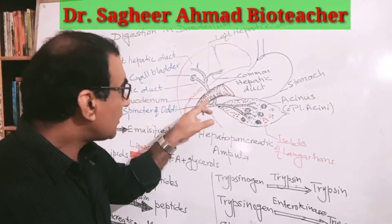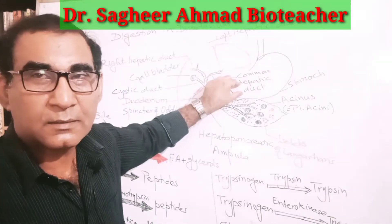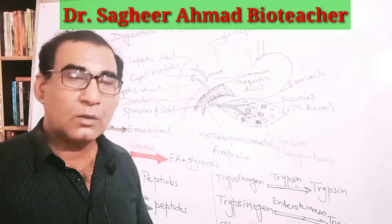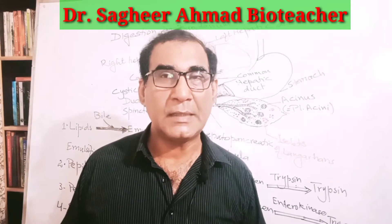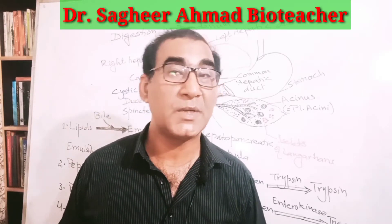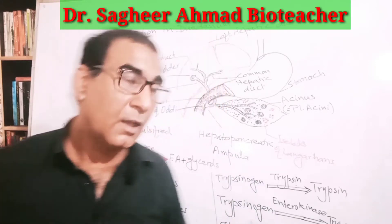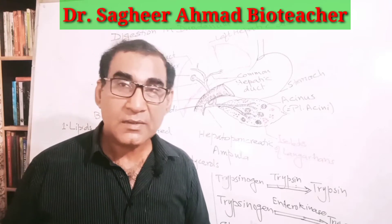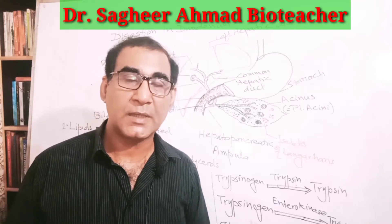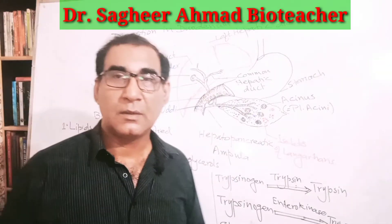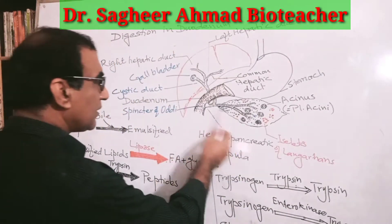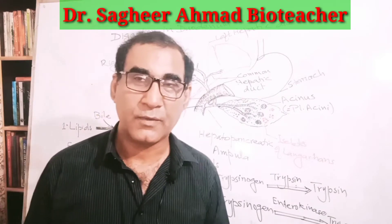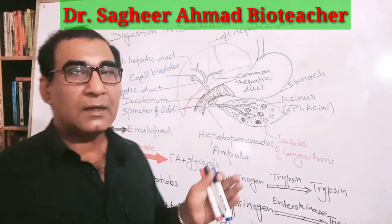The chyme enters from the pyloric part of the stomach, passing through the pyloric sphincter, and enters into the duodenum. The food material in the stomach is acidic due to the presence of hydrochloric acid. Here in the duodenum, it is neutralized by sodium carbonate ions, which are produced by the pancreas.